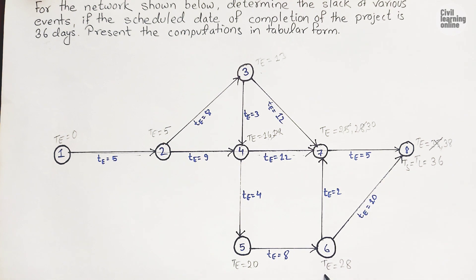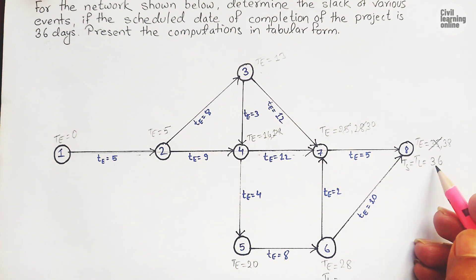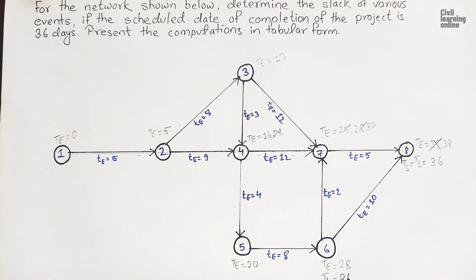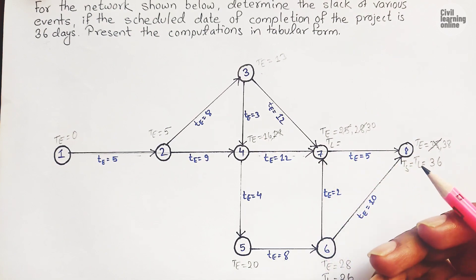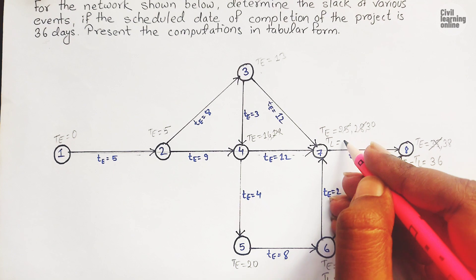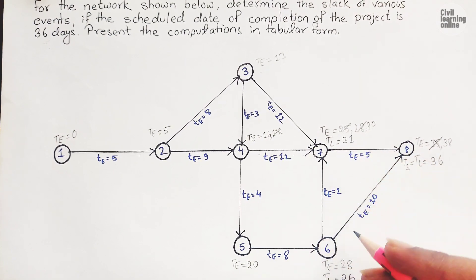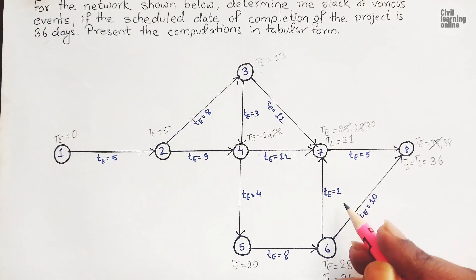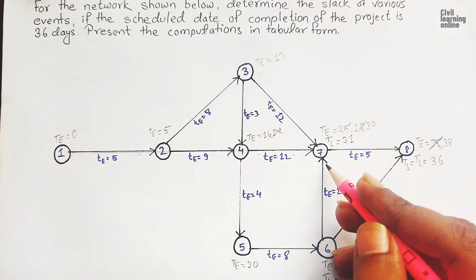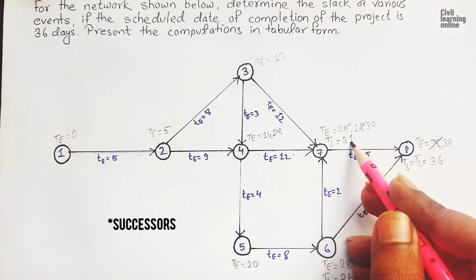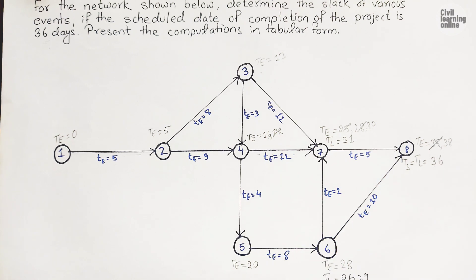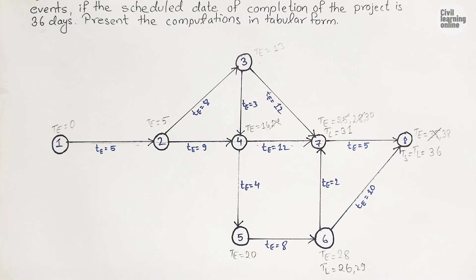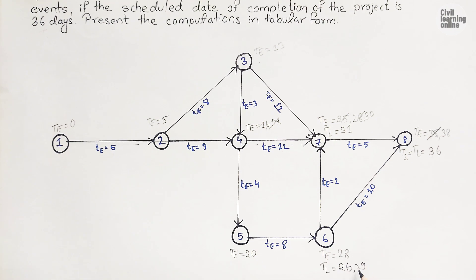Now it is time to calculate TL of event six. TL of event six will be thirty-six minus ten equals twenty-six. TL of event seven is thirty-six minus five equals thirty-one. Event six will have two TL values because it has two successors, events seven and eight. Thirty-one minus two is twenty-nine. For TL we take the least value among the two, so we cross out twenty-nine and TL of event six is twenty-six.